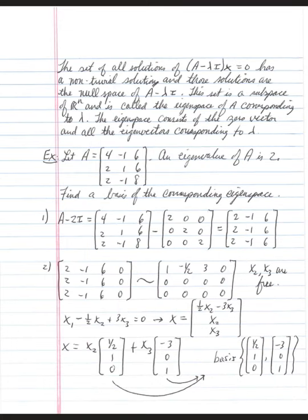The set of all solutions of A minus lambda times the identity matrix, X equals zero, has a non-trivial solution, and those solutions are the null space of A minus lambda I. This set is a subspace of R^n, and it's called the eigenspace of A corresponding to lambda. The eigenspace consists of the zero vector and all the eigenvectors corresponding to lambda.